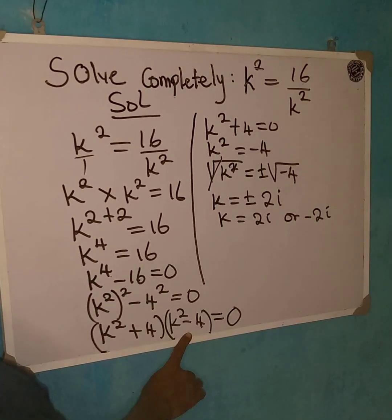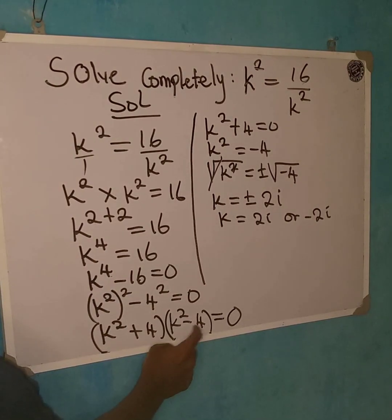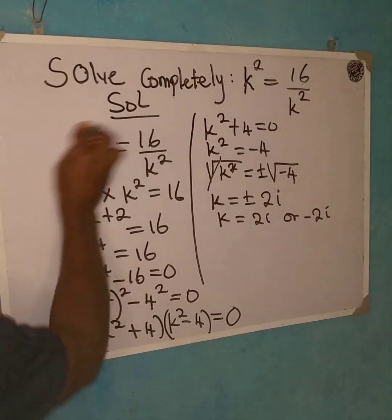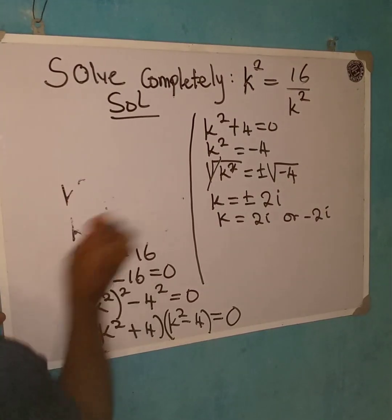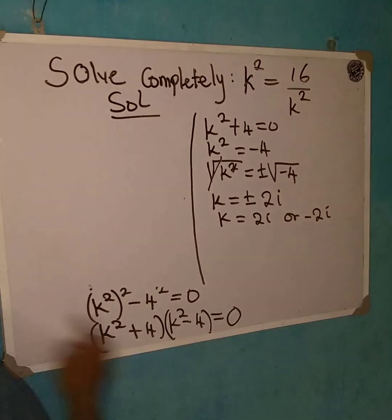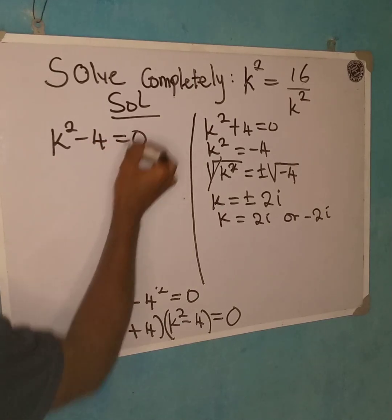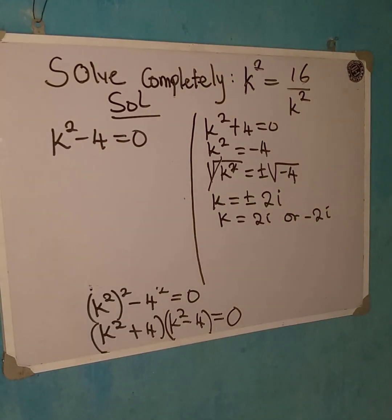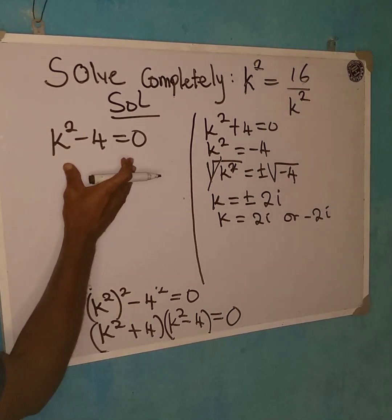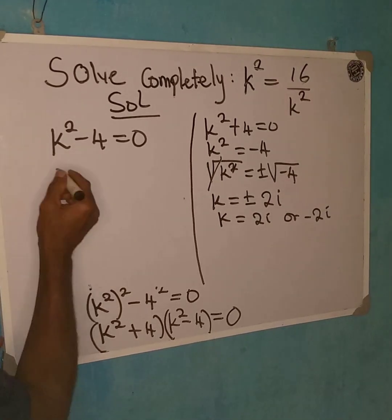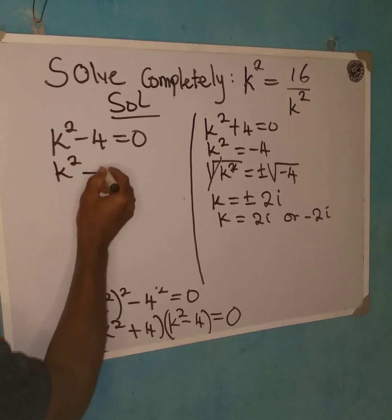But remember, I've not done anything with this particular one. So let me pick this now. So we have k squared minus 4 equals 0. And from here again, I can still apply what we call difference of two squares. From here, I can apply difference of two squares. So that we have k squared minus two squared, two squared equals 0.